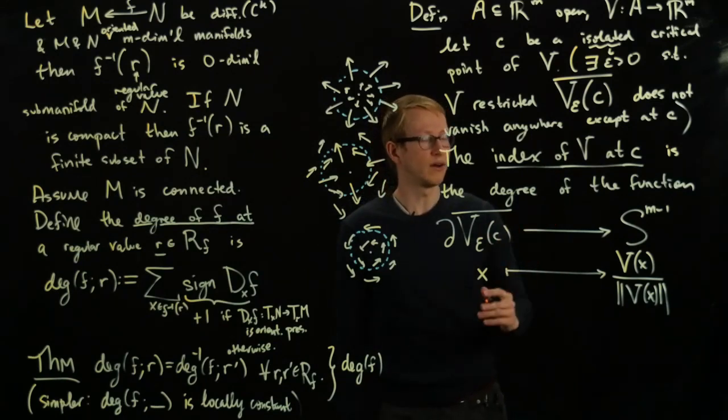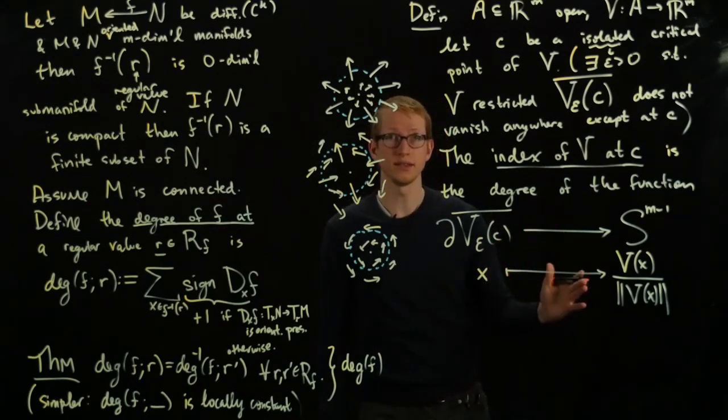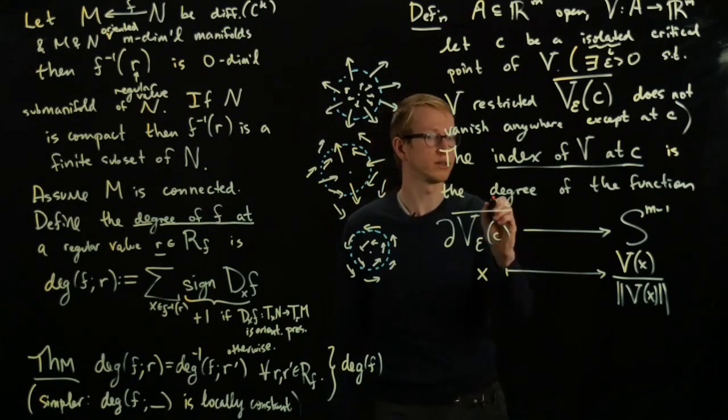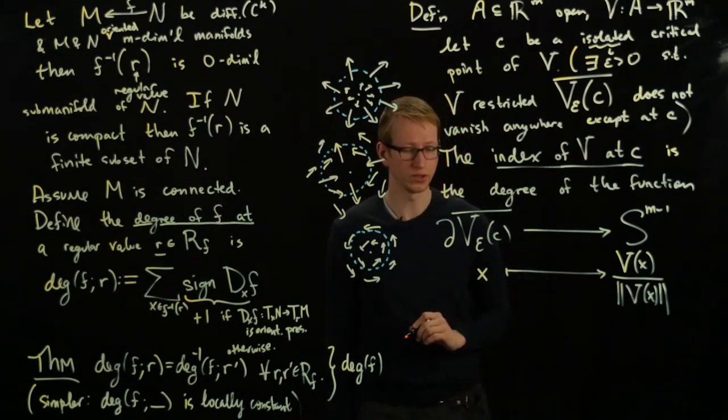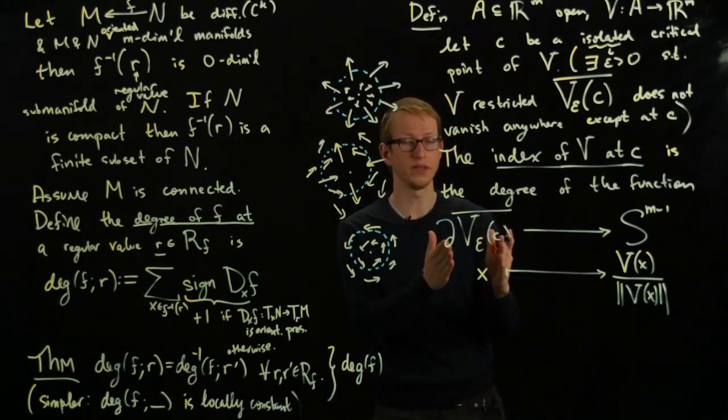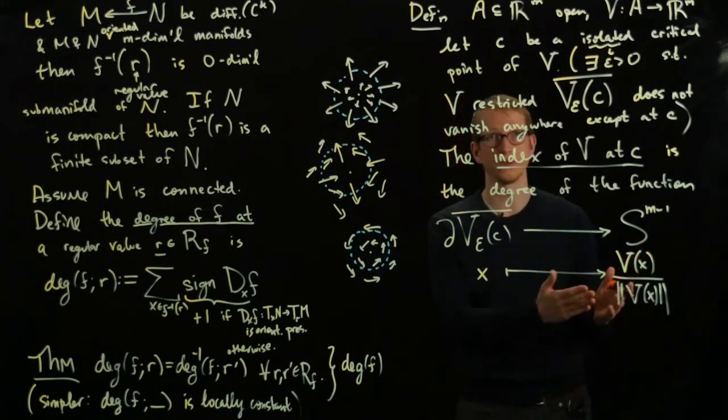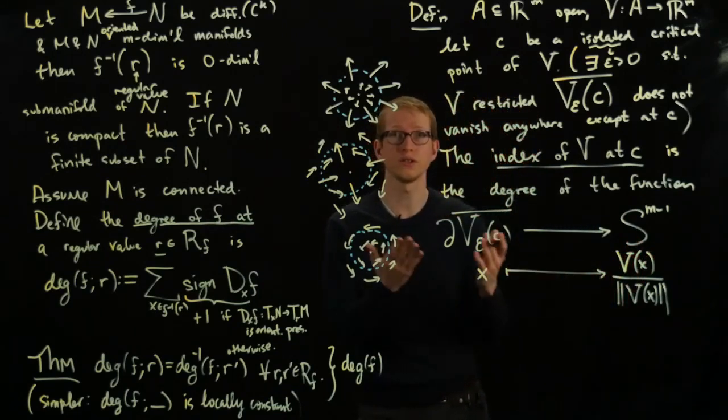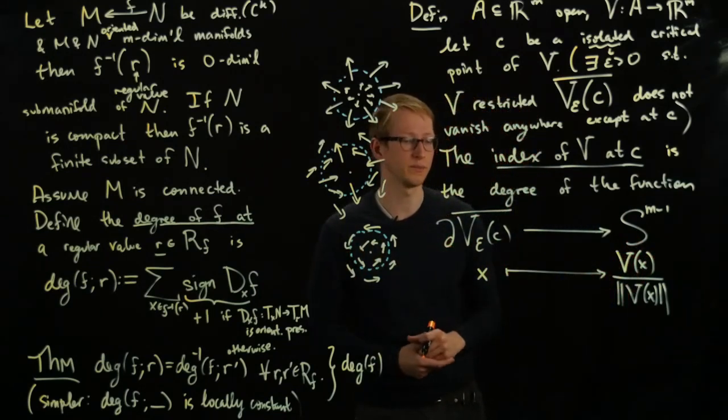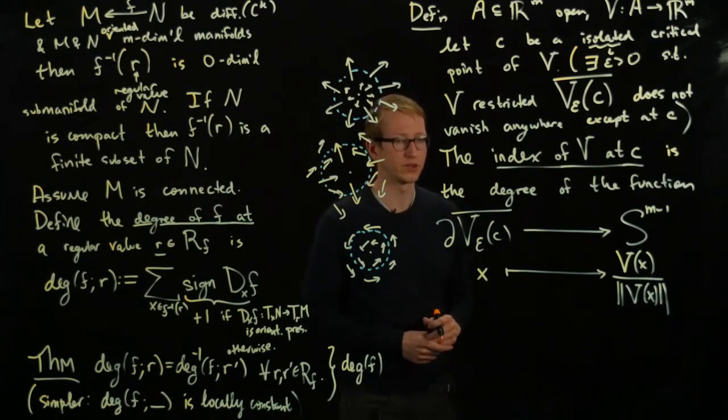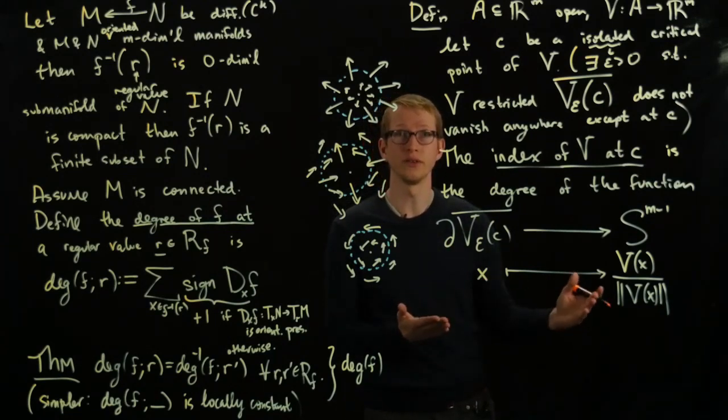So the index of a vector field at a point is the degree of this map, of this function. And remember, this is oriented because it's a sphere. It's just that it's a sphere of radius epsilon at the point C. And this is also a sphere. And both of them have natural orientations as subsets of Euclidean space. And so it makes sense to talk about the degree of this map.